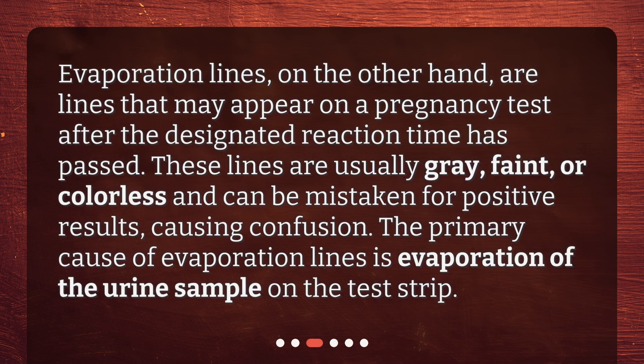Evaporation lines, on the other hand, are lines that may appear on a pregnancy test after the designated reaction time has passed. These lines are usually gray, faint, or colorless and can be mistaken for positive results, causing confusion. The primary cause of evaporation lines is evaporation of the urine sample on the test strip.